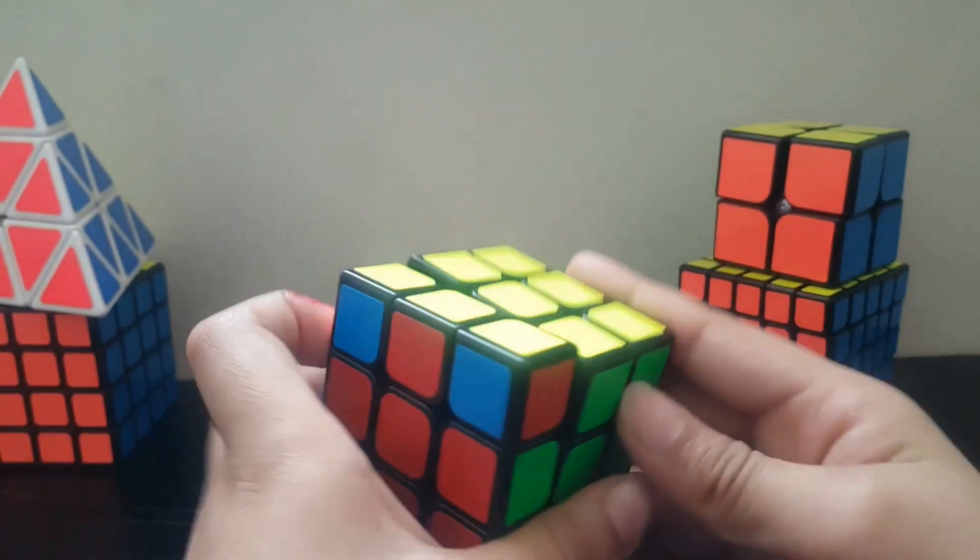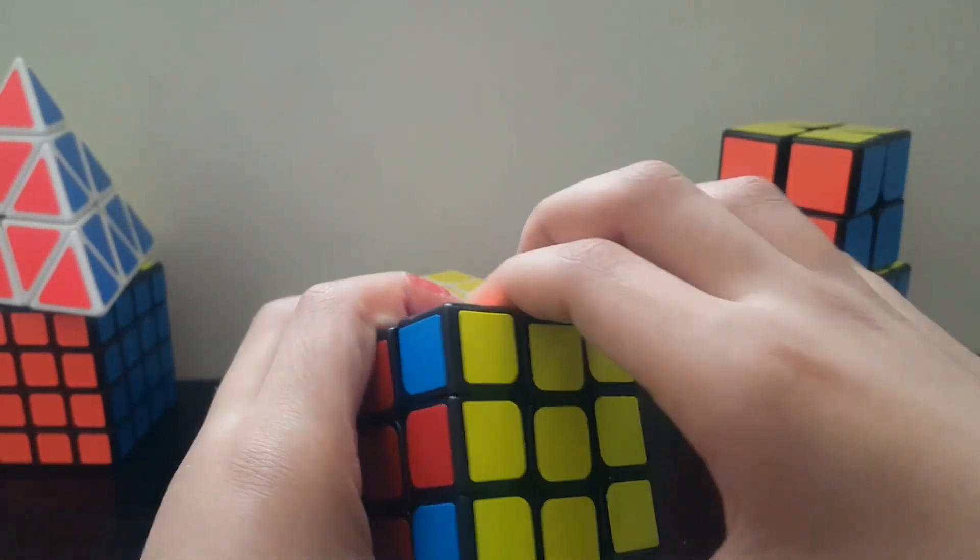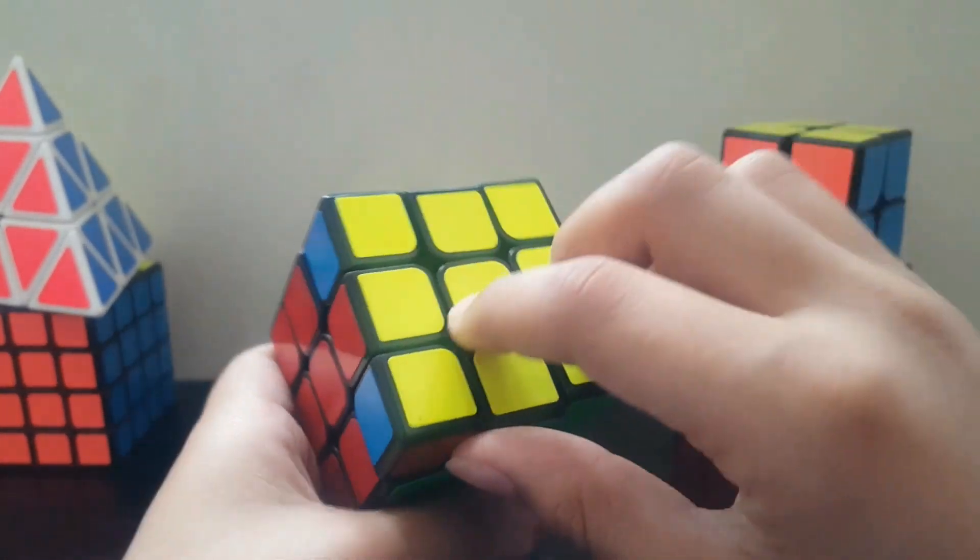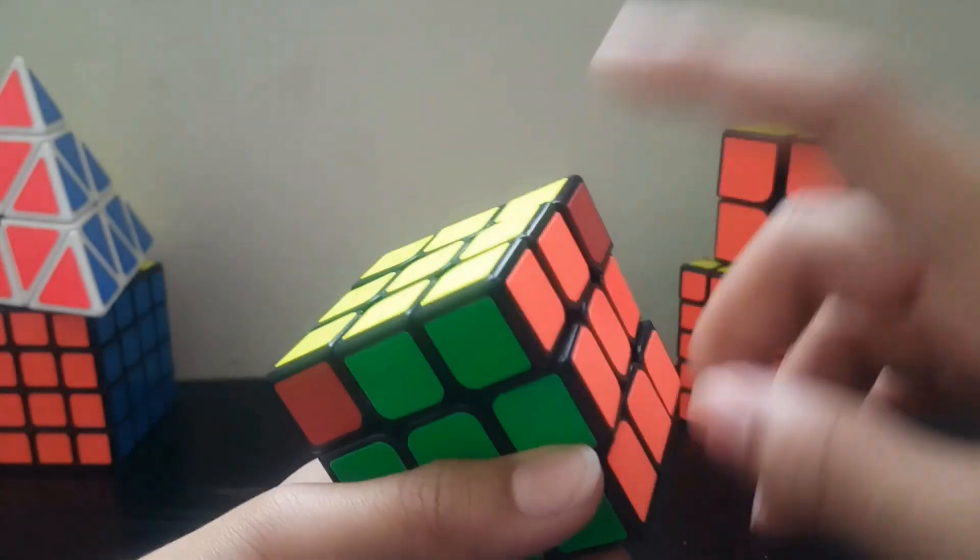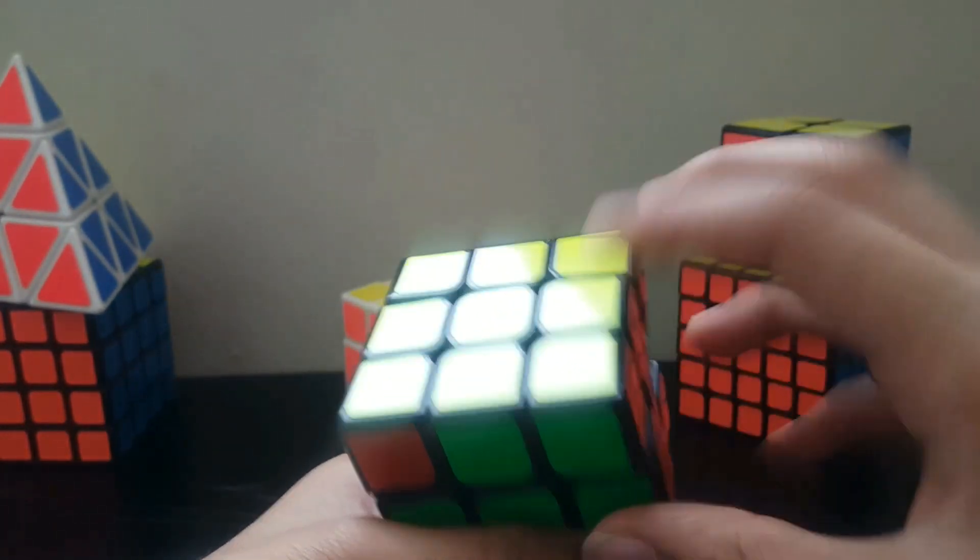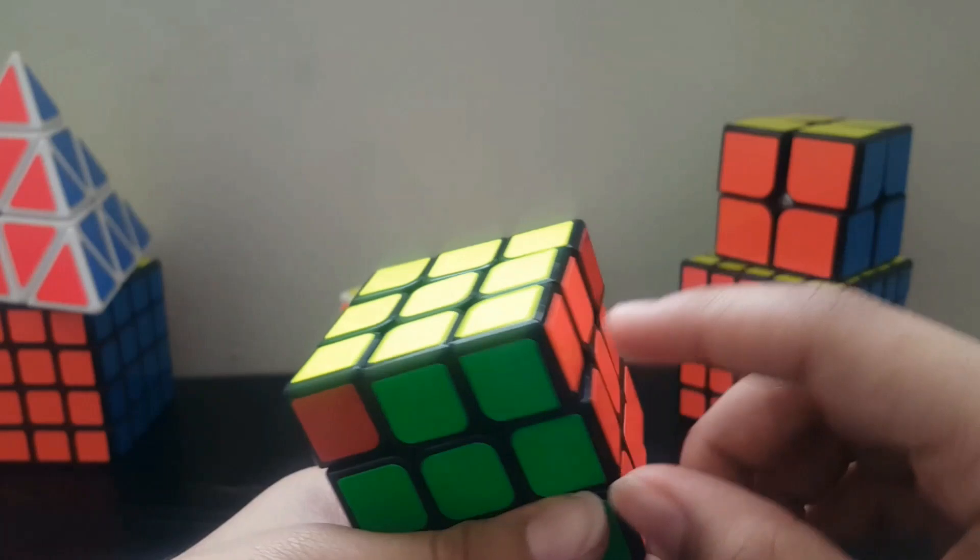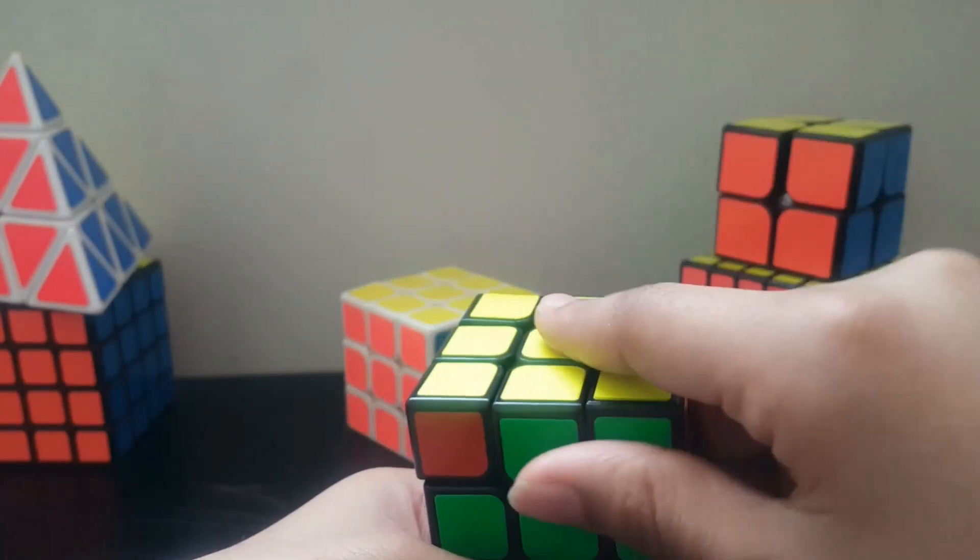Okay, now after we have done making it the same, aligning to the centerpiece by the daisy sign, next we have to solve our corners. Corners means the corner pieces.